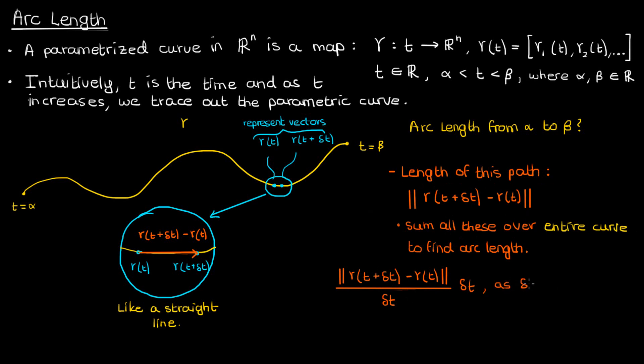What happens to this quantity as we let Δt approach zero, as we let the two adjacent points get closer and closer? Well, using the definition of the derivative, it approaches the magnitude of the derivative of γ(t), γ̇(t), times dt, where dt is an infinitesimally small version of Δt.